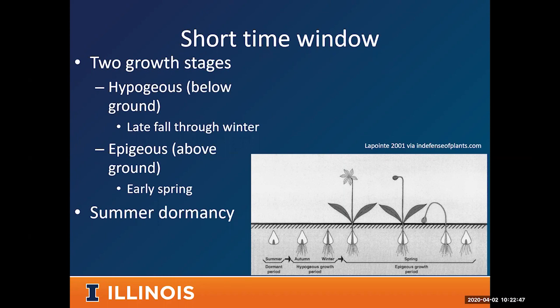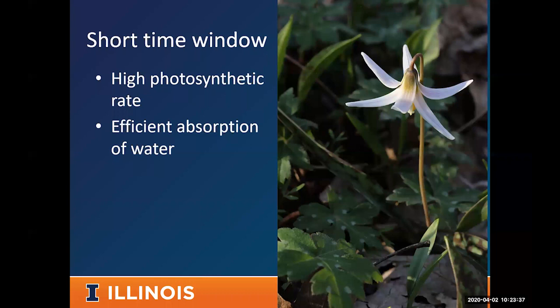We've seen that during warm spells in late fall or early winter, spring wildflowers will start putting on vegetative growth because they've already started this below-ground hypogeus growth. This primes them — getting them ready to take up nutrients, photosynthesize, and put on vegetative growth as soon as spring temperatures allow. By growing in the fall and doing that below-ground growth, they're primed to maximize that short spring window.